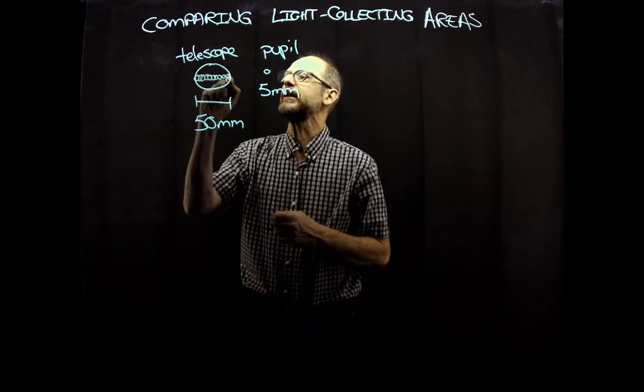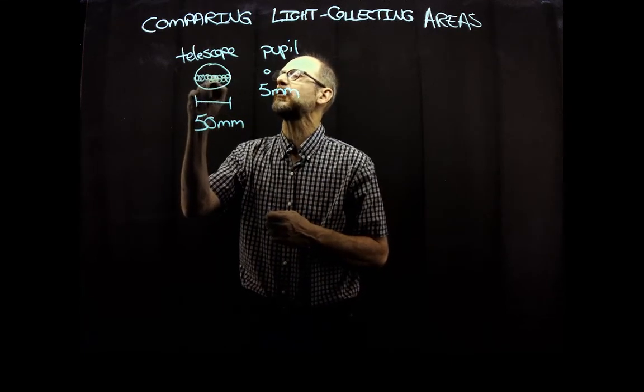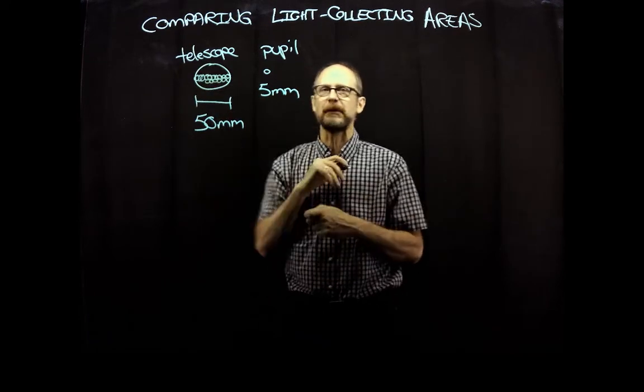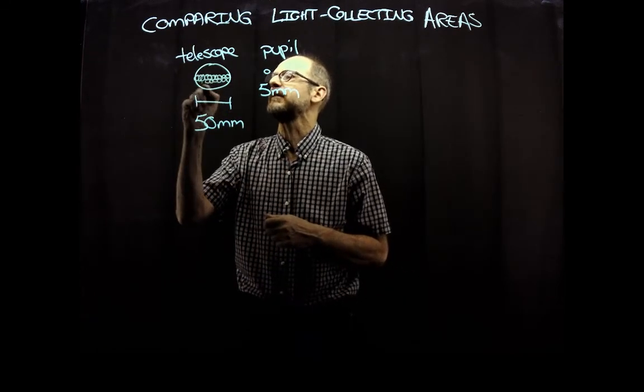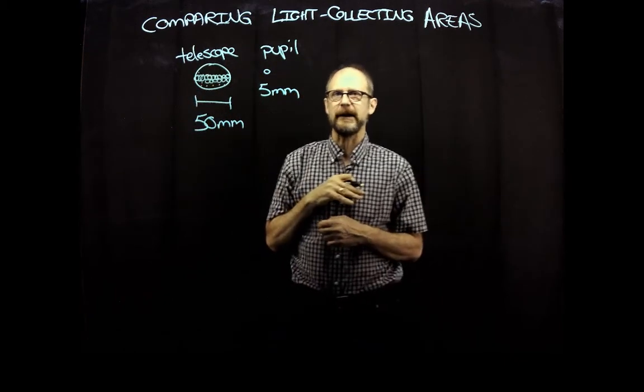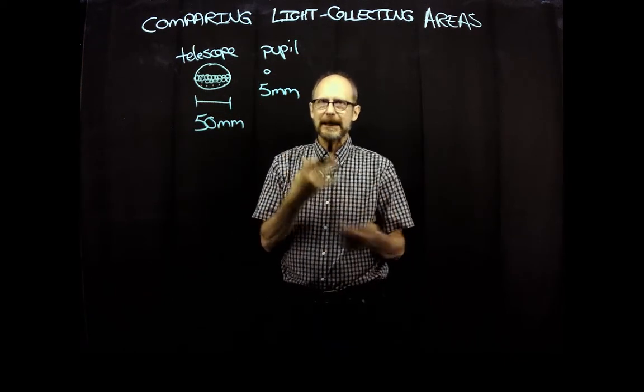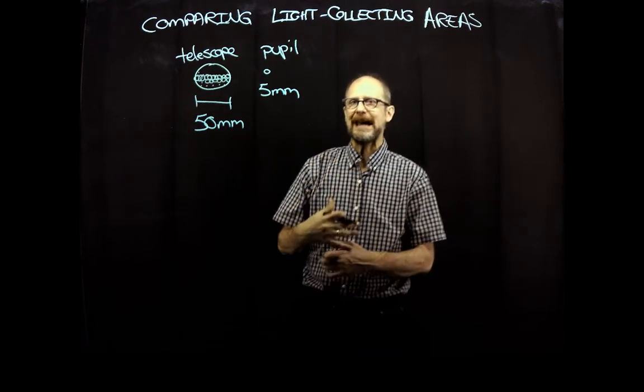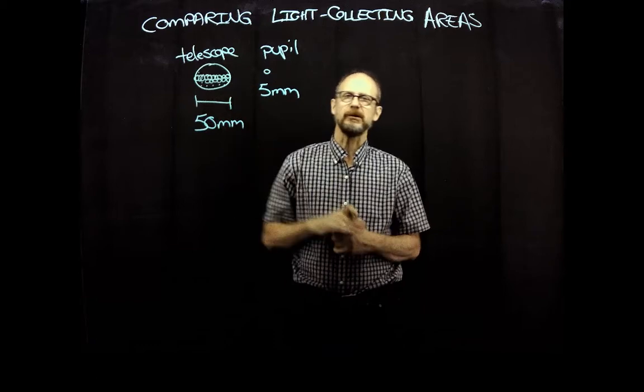And so really what I want to try to do is pack as many circles in there and then keep in mind that circles don't pack, they don't nestle, you've got the gaps between, etc. So we're trying to figure out the equivalent of how many pupils would fill that area. So what we're looking at here, trying to figure out, is what is the ratio of the areas of that circle to that circle.